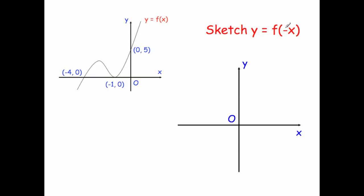First, y equals f of minus x. Because the minus is inside the bracket, it's a horizontal reflection in the y-axis. The point (0, 5) is on the y-axis so it stays at (0, 5). The point (-1, 0) reflects to (1, 0), and (-4, 0) reflects to (4, 0).